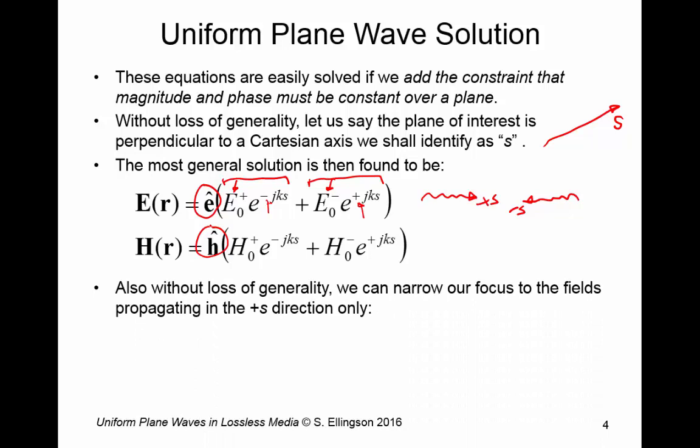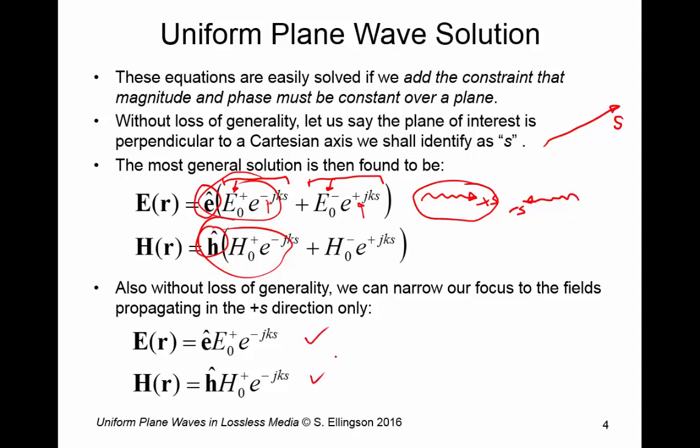Now with that loss of generality we can narrow our focus to the fields propagating in just the plus S direction. In other words just this wave, just this wave here. The reason we say there's no loss of generality is because we know the only thing that changes is a conjugate. If we conjugate these results then we get the wave traveling in the opposite direction. And by superposition then we know we can construct more general solutions as necessary.